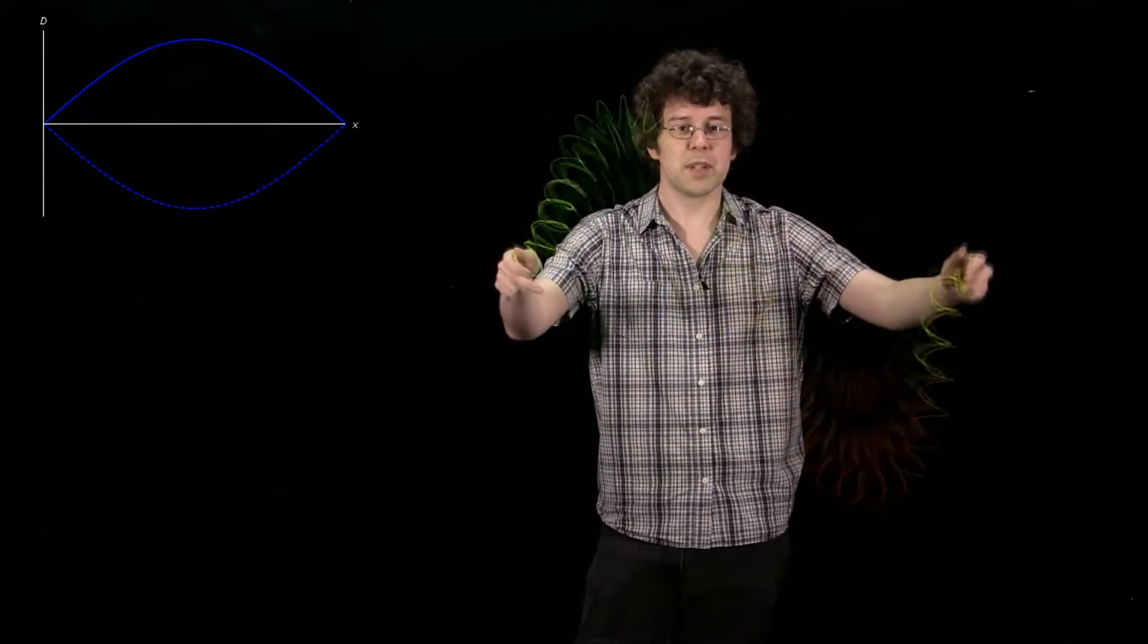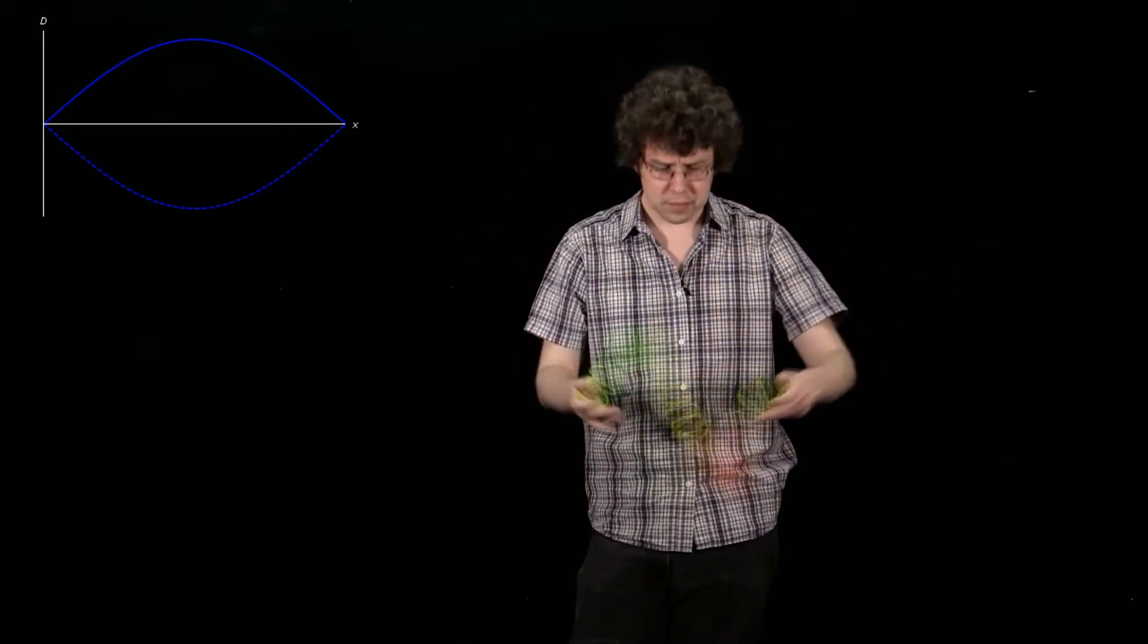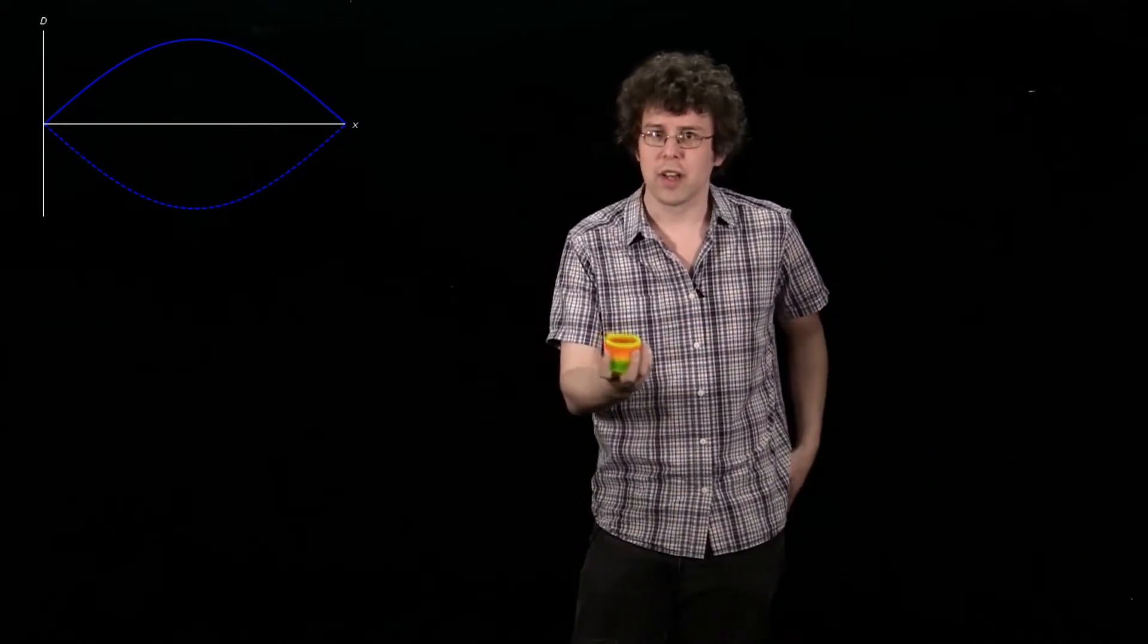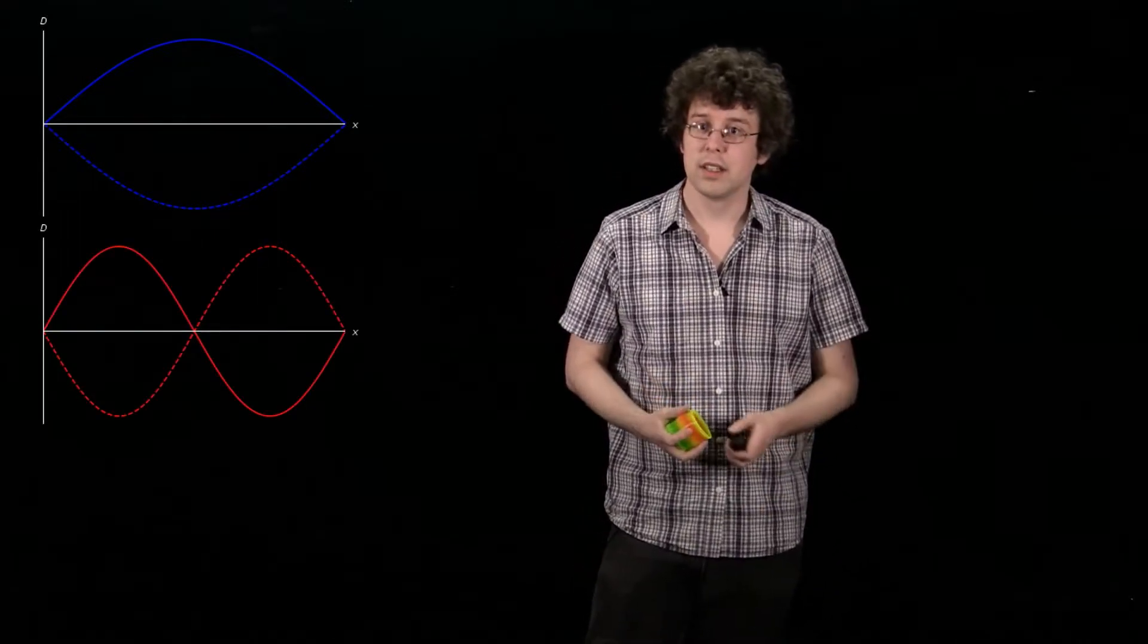And you can see there's, in between my stationary points, there's two points where my displacement is becoming big and small and big and small. So if I were to draw a snapshot of two different points in time of this wave, it would look something like this.